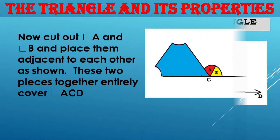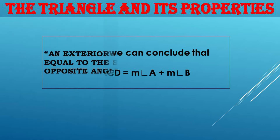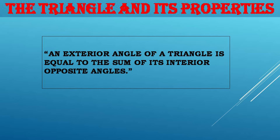Next, cut out angles A and B and place them adjacent to each other as shown in the figure. These two pieces together entirely cover the exterior angle ACD. So you can conclude that the measure of exterior angle ACD is equal to measure of angle A plus angle B. You can repeat this activity by drawing more triangles — every time you will find that the exterior angle equals the sum of the interior opposite angles.